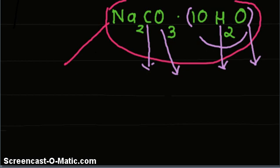So sodium is 23, carbon is 12, oxygen is 16, hydrogen is 1, and oxygen is again 16.